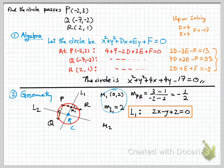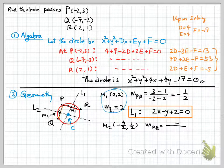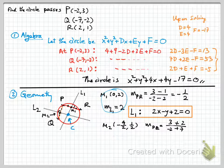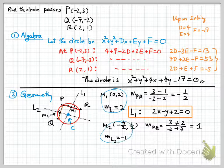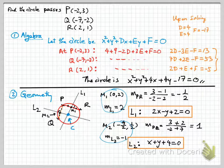Similarly, we find L2. The midpoint M2 between P(-2, 3) and Q(-7, -2) is (-9/2, 1/2). The slope between P and Q is 1, so the slope of L2 is -1. Using this information, the equation of L2 is x + y + 4 = 0.